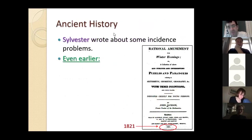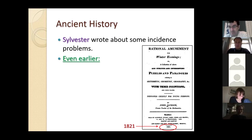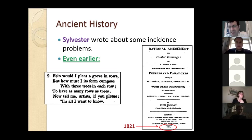Before Erdős, Sylvester wrote about incidences, and before Sylvester there was a book from 1821 called 'Rational Amusement for Winter Evenings,' which has a whole chapter with questions about incidences. Here's one example — a riddle from that book about planting trees in rows.